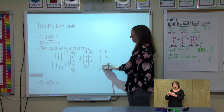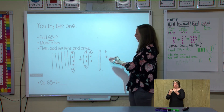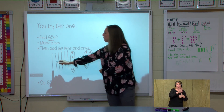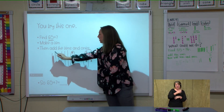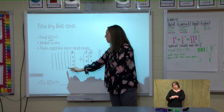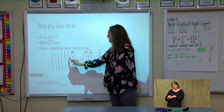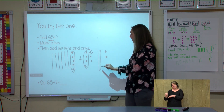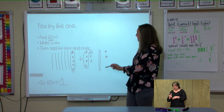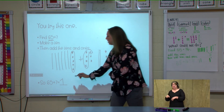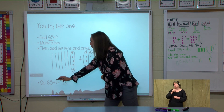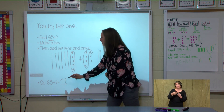So that gives us a rod and two cubes. Now we add our tens and our ones: 10, 20, 30, 40, 50, 60, 70. Put down our 7 to hold our tens place, and then 1, 2. So 65 plus 7 equals 72.